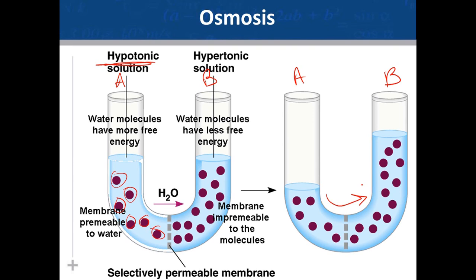In terms of water molecules: initially on side A, the water molecules had more free energy because they were more concentrated — there were fewer dissolved solutes. On side B, water molecules had less free energy because they were less concentrated. By the water molecules moving from side A to side B, we reach equilibrium with concentrations roughly equal on both sides of the membrane. This net movement of water across the membrane is called osmosis.